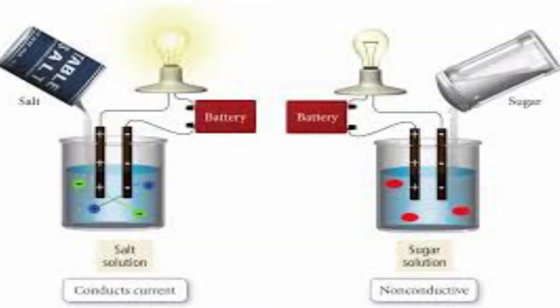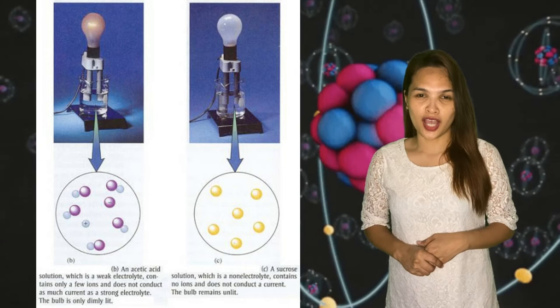It is a strong electrolyte because it dissolves completely into its sodium ions and chloride ions. If we put sucrose in water, the bulb will not light up because there are no ions in solution.